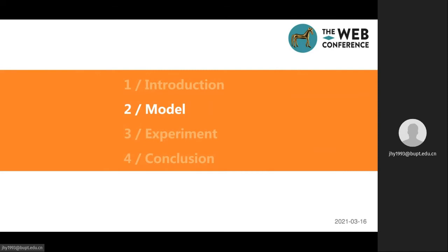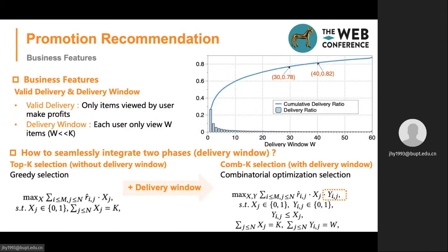The second part is the model. The first business feature is valid delivery, which means only items viewed by users make profits. The second is the delivery window, which means each user only views w items, and w is much less than k. So how to seamlessly integrate the two phases based on the delivery window? We introduce the top-k selection with a delivery window, which is actually a greedy selection. If we consider the delivery window, it becomes much more complex — just like ComboCat recommendations, a combinatorial optimization selection.